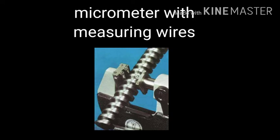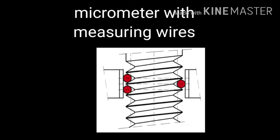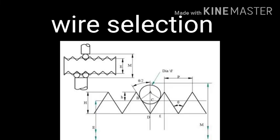Let's check the images to see how we measure with the wire. We choose the correct wire diameter for the thread. We measure the pitch diameter using that wire. So, we choose this wire for a small diameter thread.